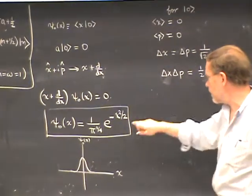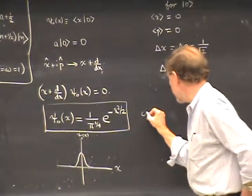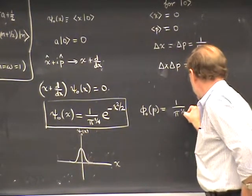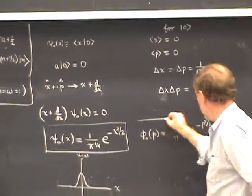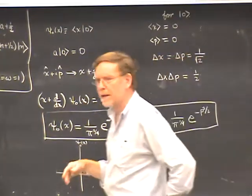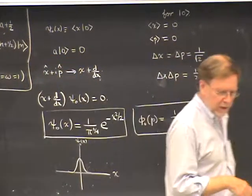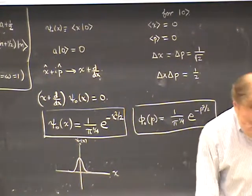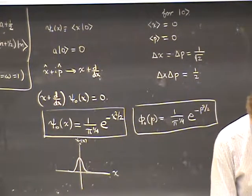Talking about momentum, it's interesting to take the Fourier transform of psi-zero to obtain a momentum space wave function phi-zero of P. That's straightforward. It leads to the same 1 over pi to the one-quarter normalization, and it becomes e to the minus P squared over 2. The momentum space wave function has the same functional form as the configuration space wave function — this is an example of a wave function which maps to itself under Fourier transform.